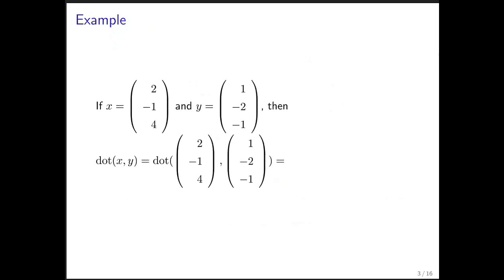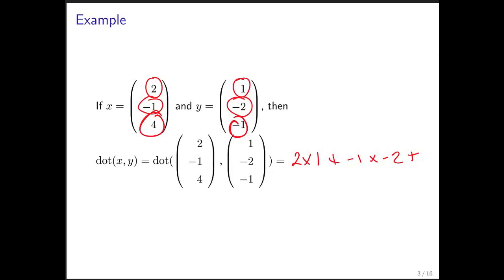Let's do an example. If we're given two vectors x and y of size 3, then their dot product is given by 2 times 1, plus negative 1 times negative 2, plus 4 times negative 1. For a total of — that's 2, plus 2 is 4, minus 4. In this particular case, the result is 0.